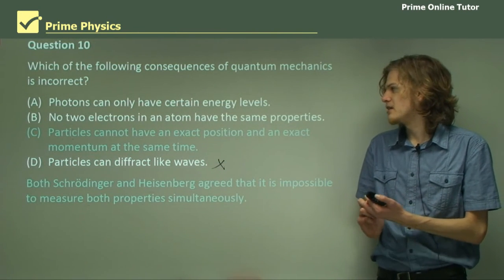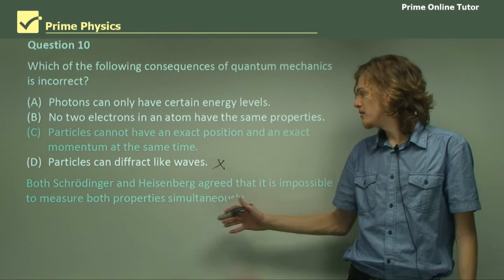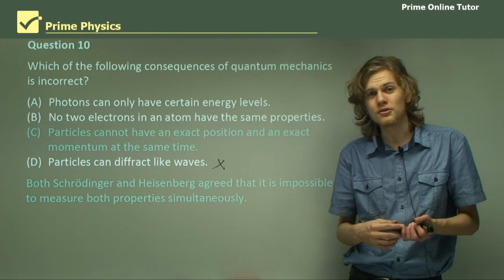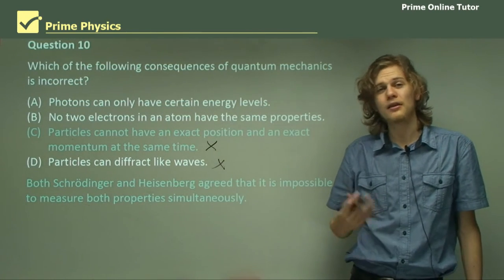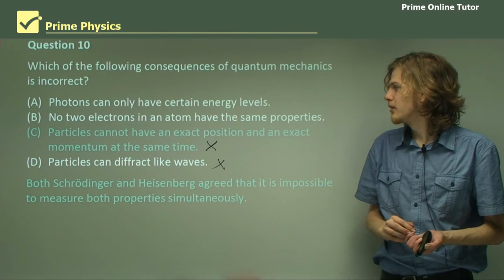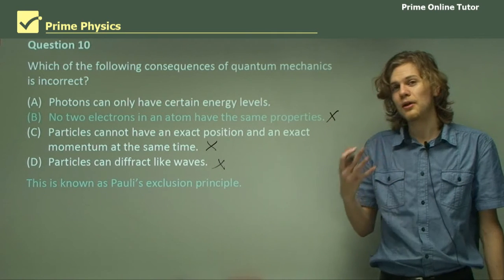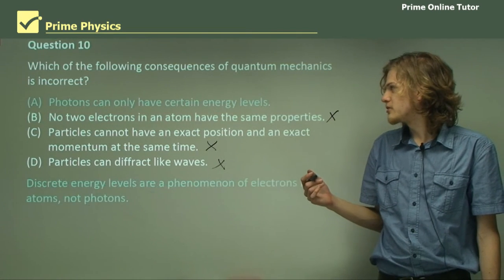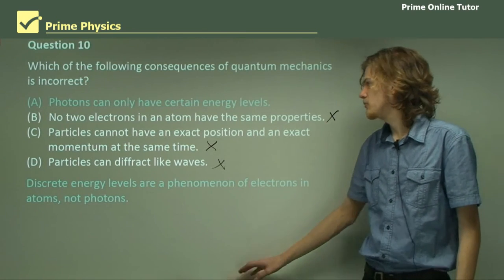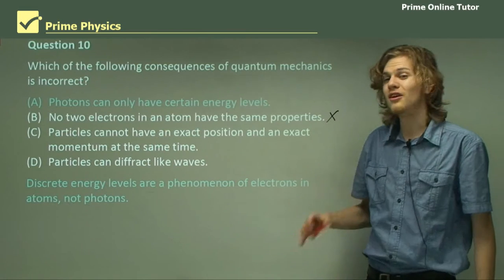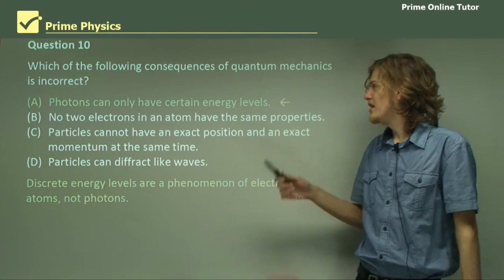C — particles cannot have an exact position and an exact momentum at the same time. Both Schrödinger and Heisenberg agreed it's impossible to know both of these things at once, and the current interpretation of quantum physics says they don't have both at the same time. B — no two electrons in an atom have the same properties — is just Pauli's exclusion principle, a big step forward in quantum mechanics. That leaves A — photons can only have certain energy levels — and actually, electrons can only have certain energy levels; photons are under no such restriction. Photons are the energy levels. So discrete energy levels are an electron thing, not a photon thing, and A is not a correct consequence of quantum mechanics.